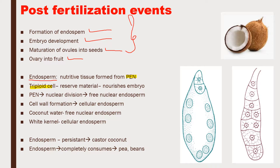In most species, endosperm development takes place when the primary endosperm nucleus undergoes nuclear division and forms the free nuclear endosperm. When cell walls form, it leads to the formation of cellular endosperm. So this is free nuclear endosperm and this is cellular endosperm.